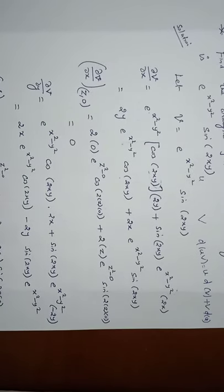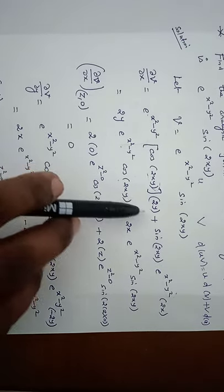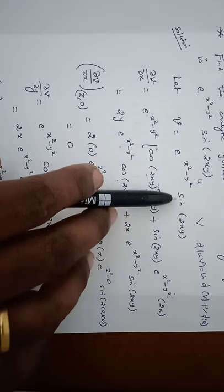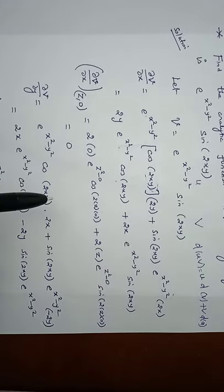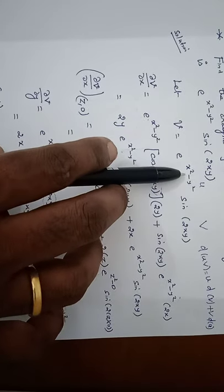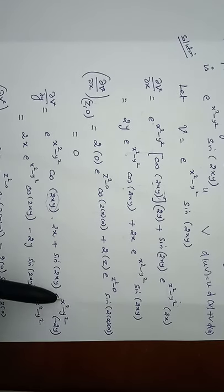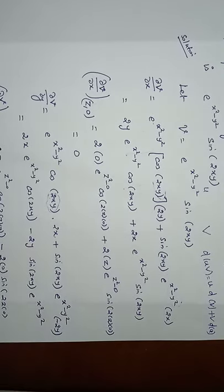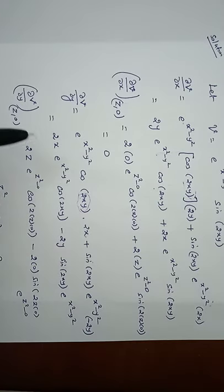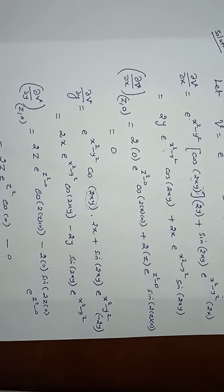Similarly, we differentiate with respect to y using the product (uv) formula. Differentiating sin(2xy) with respect to y gives cos(2xy)·2x. So the first term is e^(x²−y²)·cos(2xy)·2x. The derivative of e^(x²−y²) with respect to y is −2y·e^(x²−y²). So ∂v/∂y = 2x·e^(x²−y²)·cos(2xy) − 2y·e^(x²−y²)·sin(2xy).